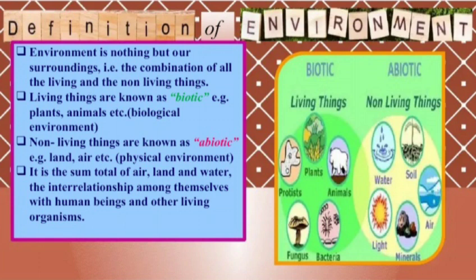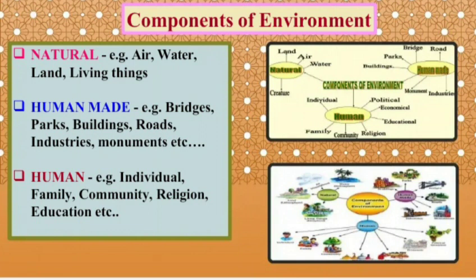Now let us see the components of environment. First is natural environment, which is related to natural surroundings — for example air, water, land, and living things. Second is human-made environment, which includes all things made by human beings, for example bridges, parks, buildings, roads, industries, and monuments. The last one is human environment, which includes human-related values and beliefs, for example individuals, family, community, religions, and education.